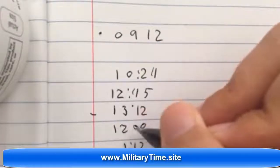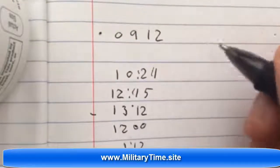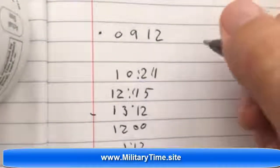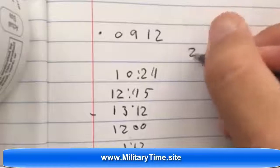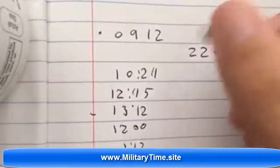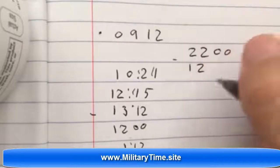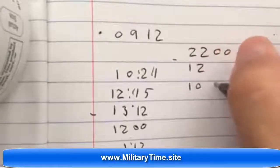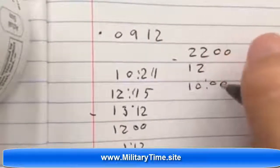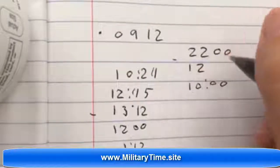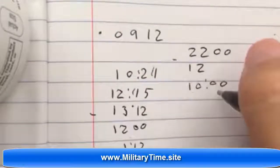Past 12 in military time, once you get to 13, I'll do it with 2200. It's the afternoon. So let's say you have 2200 hours. Just take away 12 and you end up with 10. It's 10 at night. So 2200 hours on a military clock is 10 at night.